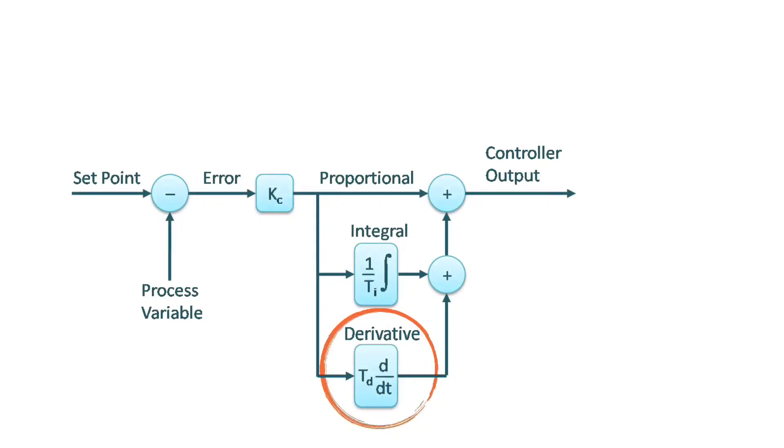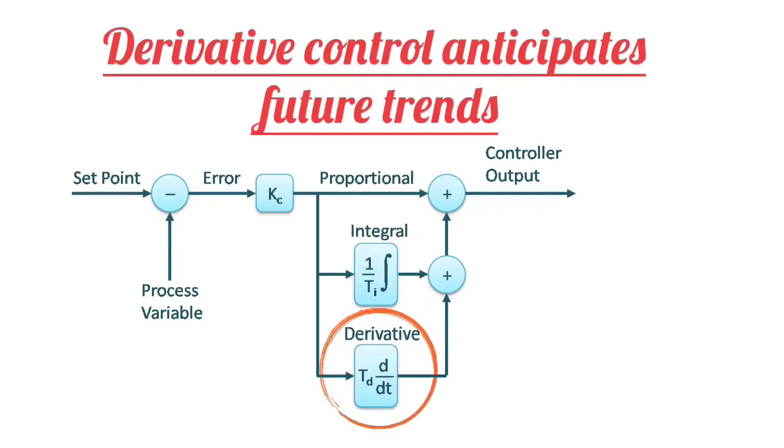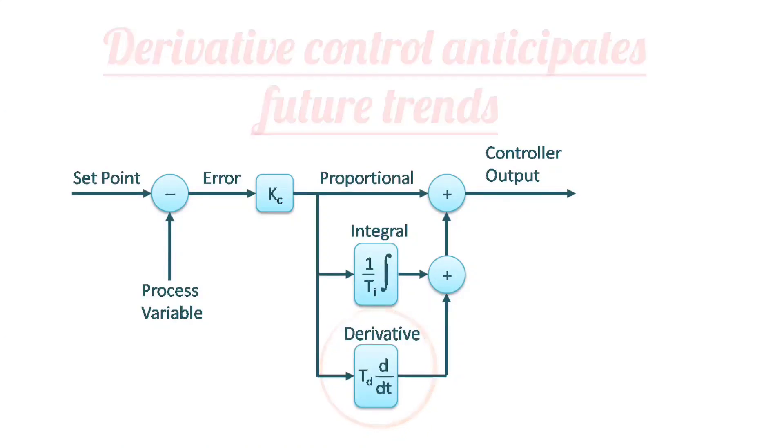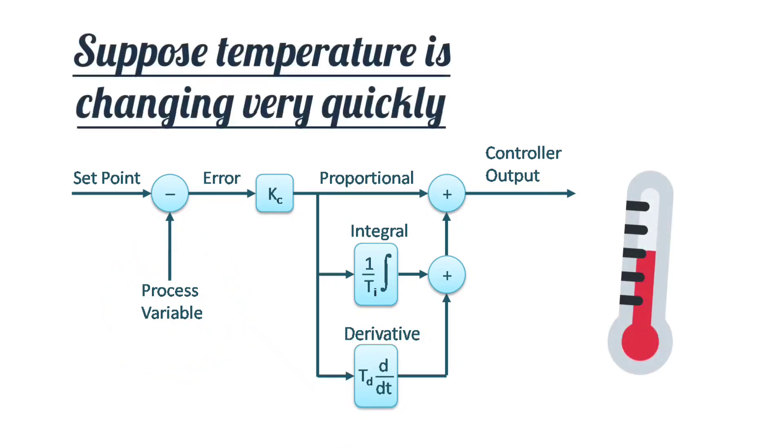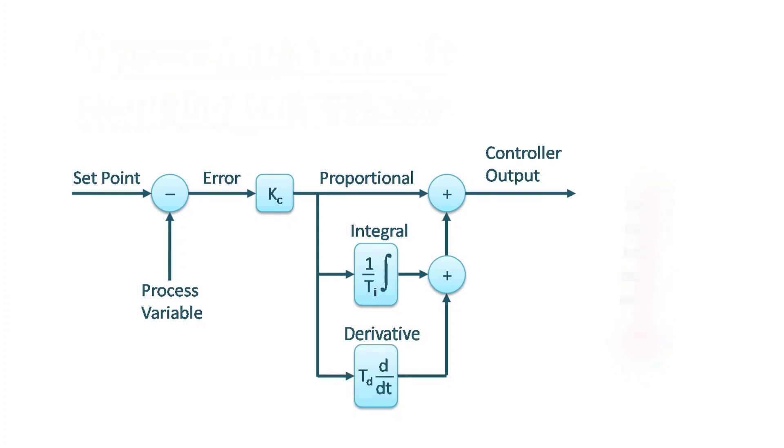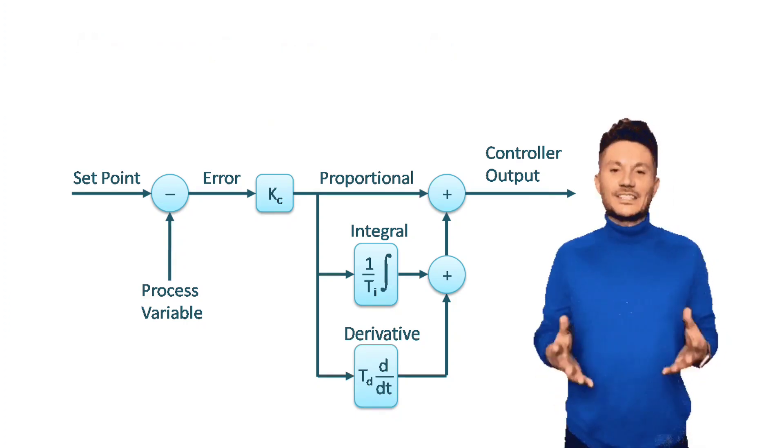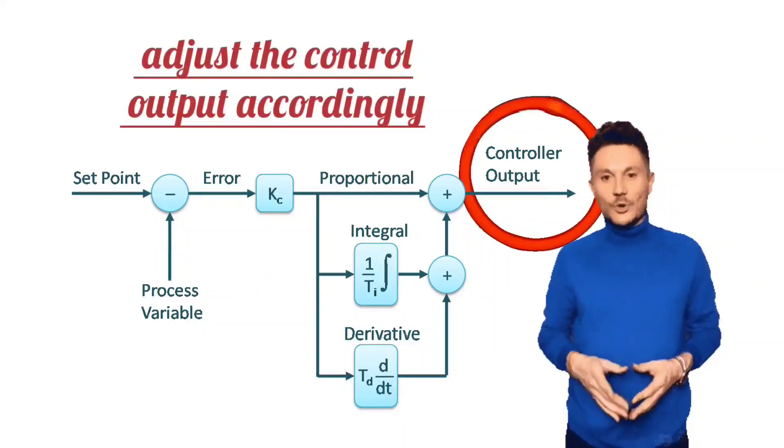Derivative control, on the other hand, anticipates future trends. If a process variable, such as temperature, is changing very quickly, the derivative control will notice that change and adjust the control output accordingly.